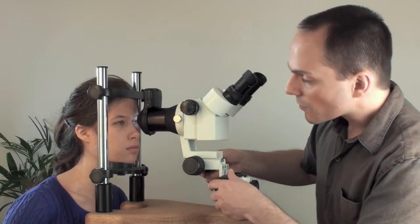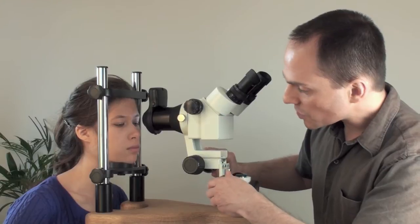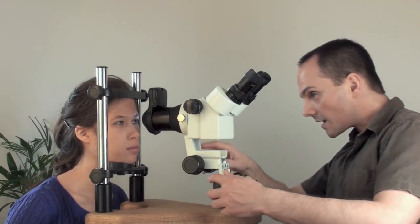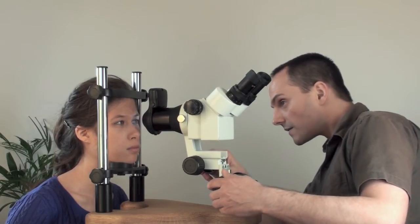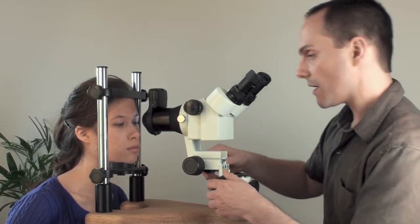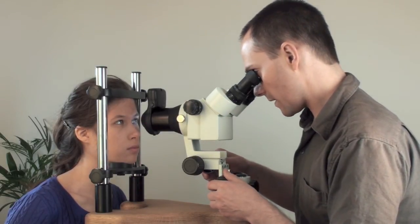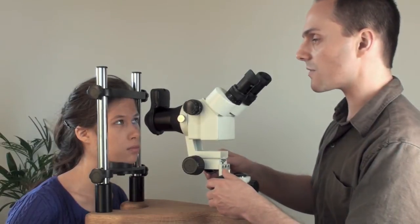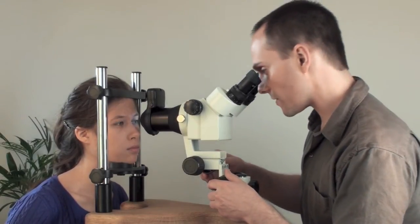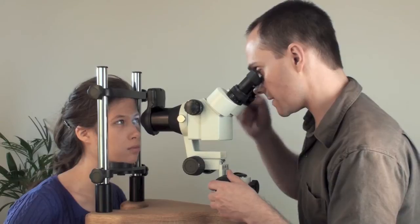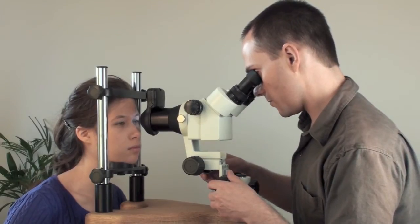So here we go. What happens is we make sure that the height is set correctly, roughly like this. There we go. And then we can look through here. Now the whole microscope swings around, so just gently swing it around so that you're facing the iris and you'll be able to see in here. There we go, perfect.